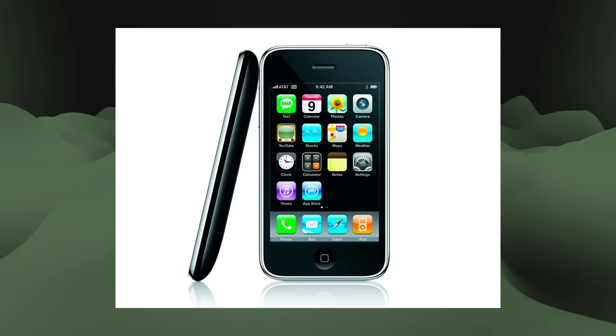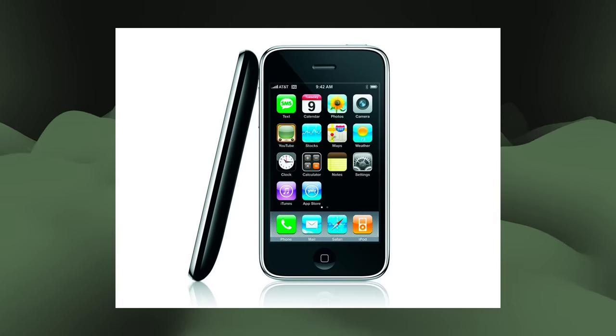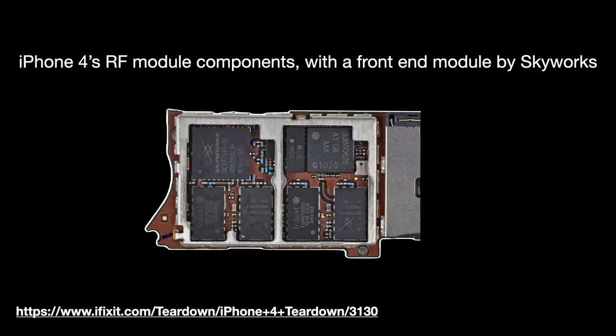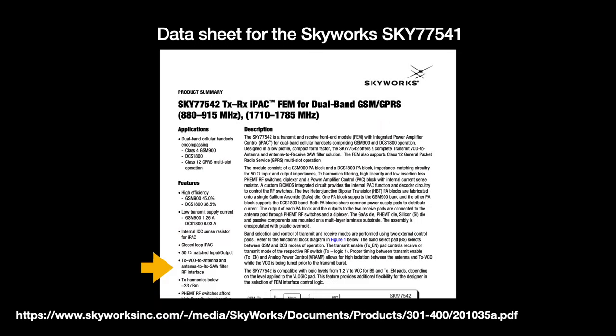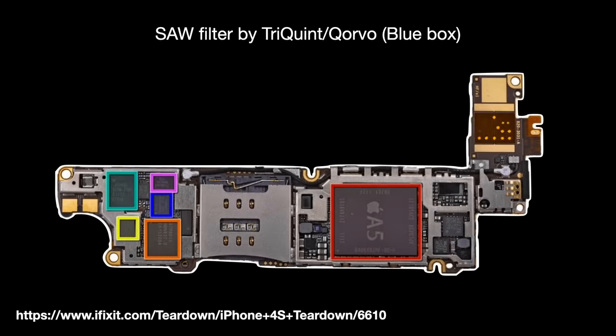iFixit's teardown article back then mused on whether the filters came from the Japanese company Murata. This continued to be the case with the iPhone 4 and 4S. The iPhone 4's SAW filters were manufactured by Skyworks — I dug up a Skyworks datasheet confirming that its front-end module is a dual-band equipped with SAW filters. And as for the iPhone 4S, I think those SAW filters came from the American semiconductor company TriQuint, which is now Corvo, after they did a big merger with RF Micro Devices in 2015.